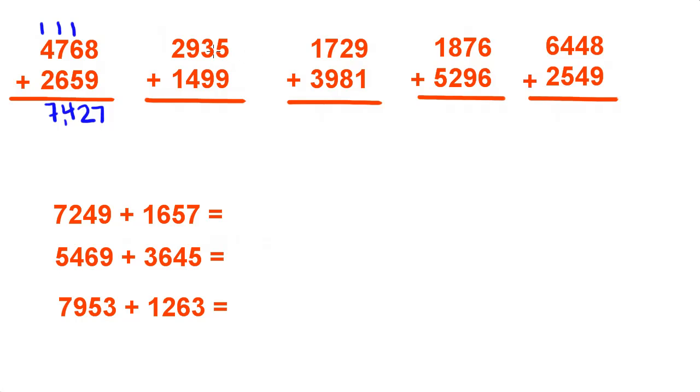Same deal over here. We start in the ones place. 5 and 9 is 14. Carry over the 1, bring down the 4. 9 and 1 is 10 plus 3 is 13.